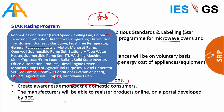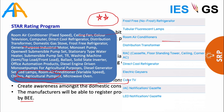Equipment covered under the star labeling program includes room air conditioners, ceiling fans, color televisions, computers, refrigerators, distribution transformers, agricultural pumps, and generators. Equipment under the mandatory category includes frost-free refrigerators, tubular fluorescent lamps, room air conditioners, color TVs, inverter ACs, and LED lamps. Microwave ovens and washing machines are newly added but remain in the voluntary phase.